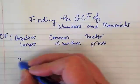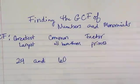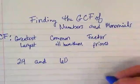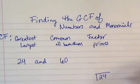So we're going to start with the numbers 24 and 60. To find these, we're going to factor both of them. So I'm going to start with 24. I like the kick method.